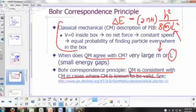The potential energy is zero inside the box. What does that mean? It's constant, there's no force acting on the particle, it's just going to be moving back and forth from wall to wall at constant speed. So there's no net force, then there's going to be equal probability of finding particle everywhere in the box.